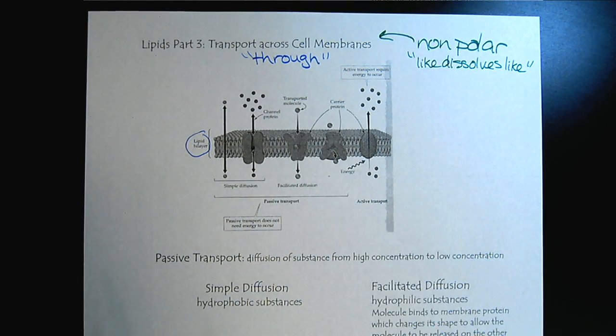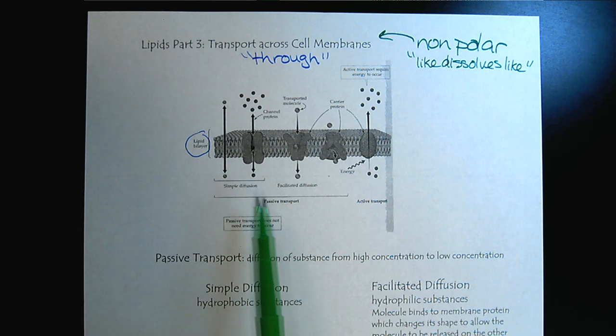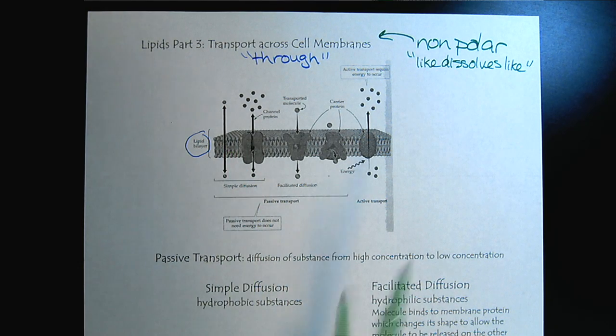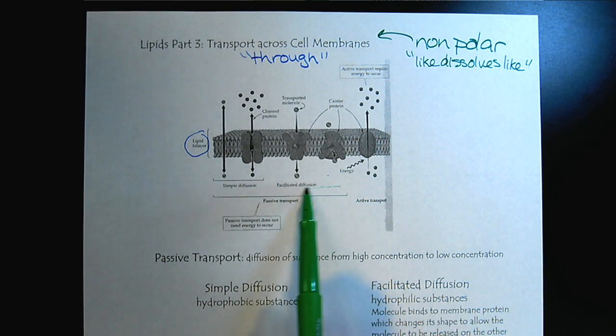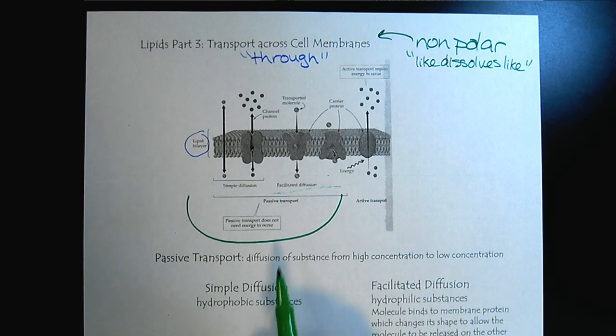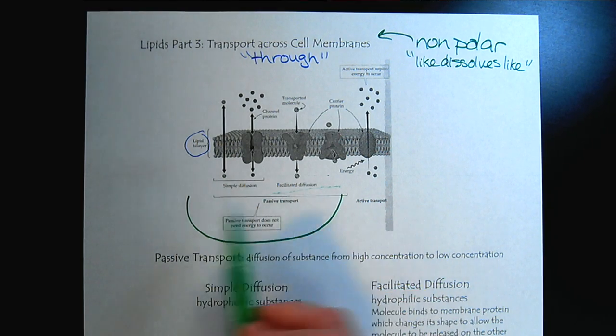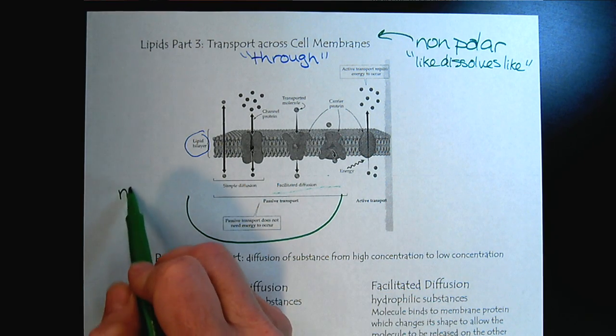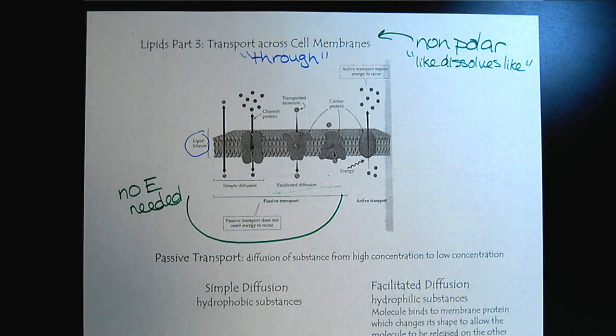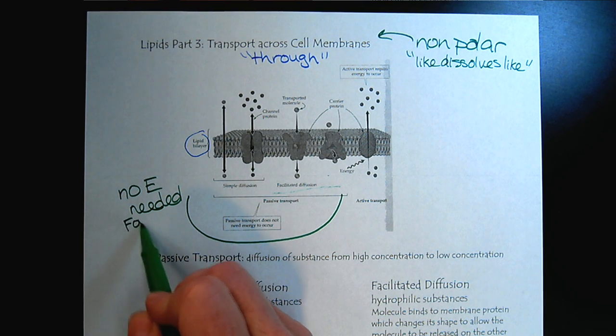Because within our body fluids we have ions and small covalent molecules and larger molecules, there's a variety of mechanisms that we can use for getting substances through our membranes. They're classified by the energy required. So here we can see the passive transport. Passive transport is where no energy is needed. The substances can get through without additional energy. So no energy needed for transport.